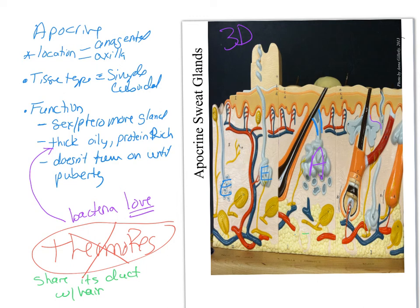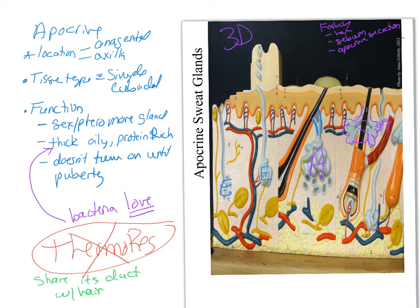Over here is the sebaceous gland — a very different structure. It looks like a bag hanging off the sides of the hair, not the cut-thread look. Three things go into the hair follicle: the hair, sebum from the sebaceous gland, and apocrine secretions — all sharing the duct in the anogenital region. In other areas of the body like the back of your arms, it's just hair and sebum, because apocrine glands are only anogenital and axillary in location.